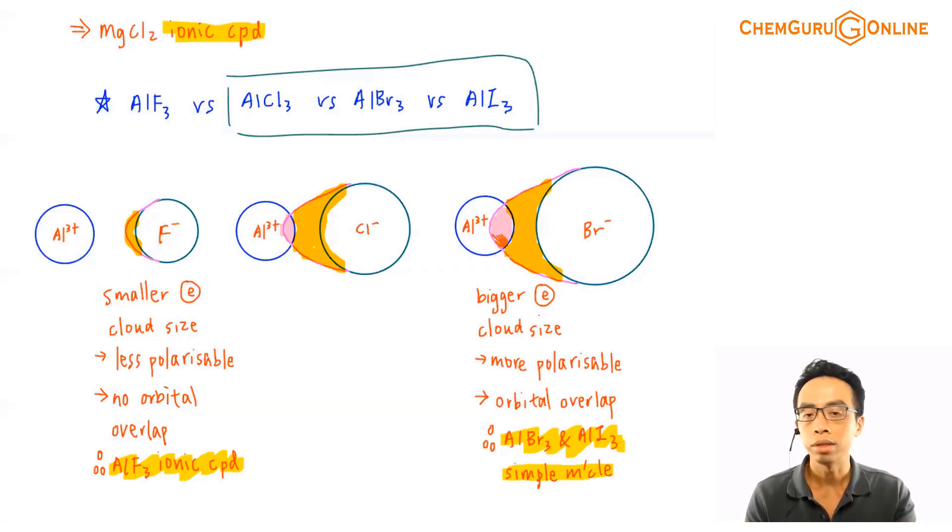to an even larger extent than Cl-. So if Cl- forms a covalent bond with Al3+, Br- and I- will do exactly the same thing.